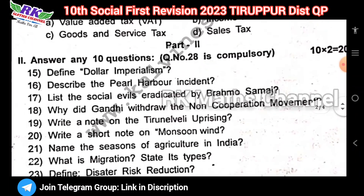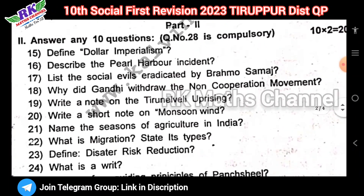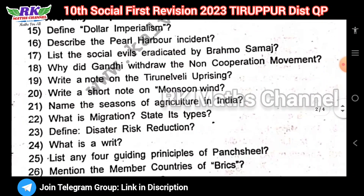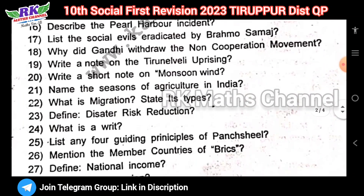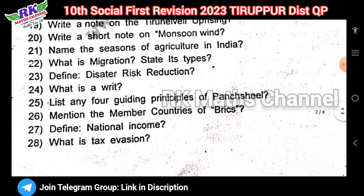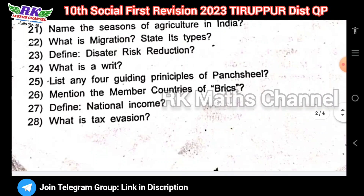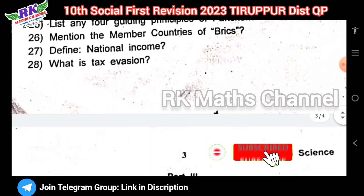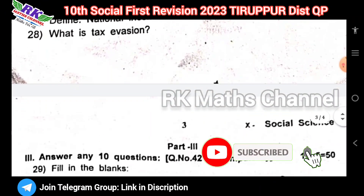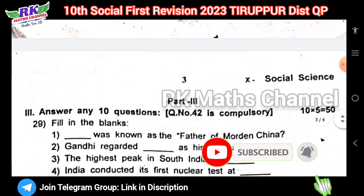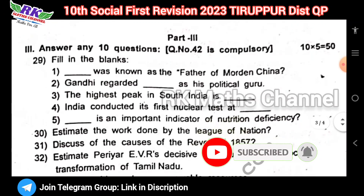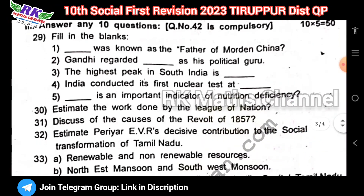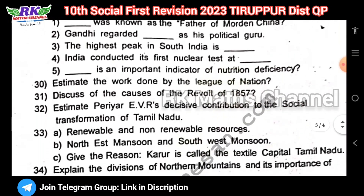Next, Part 2 has 2-mark questions — 10 questions here. Question number 28 is a compulsory question. And Part 3 has 5-mark questions — 10 questions. Question number 42 is a compulsory question.